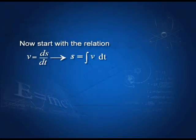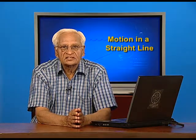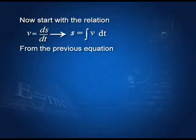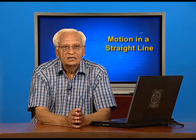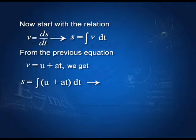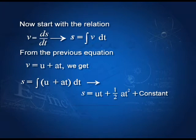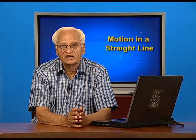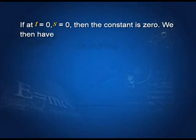For the next equation, we use the relation v = ds/dt, so that s = ∫v dt. From the previous equation, v = u + at. We substitute v = u + at into this integral and integrate. What we get is s = ut + ½at² plus a constant. This constant is again determined by the initial condition. If initially s = 0, then the constant is 0 and we get s = ut + ½at².